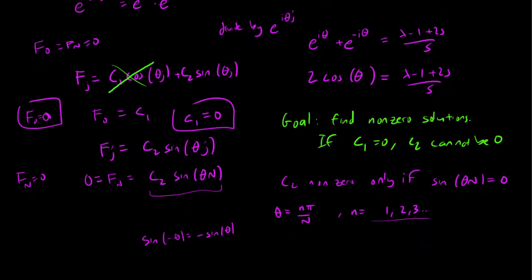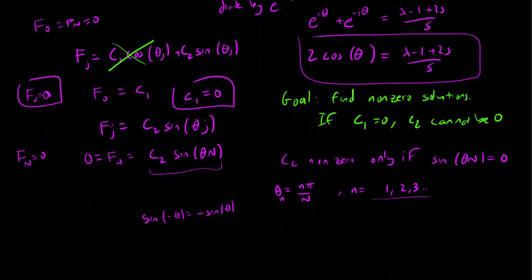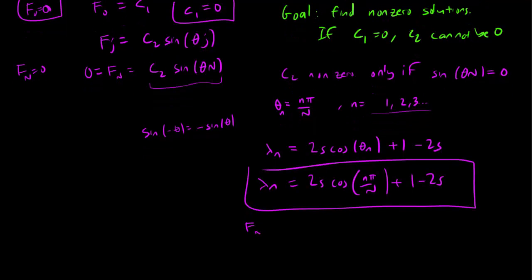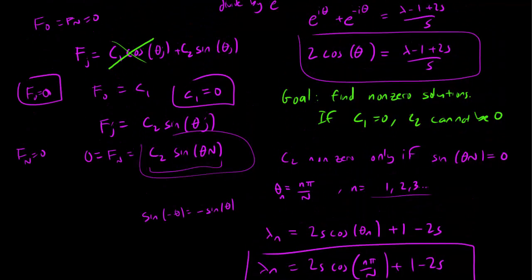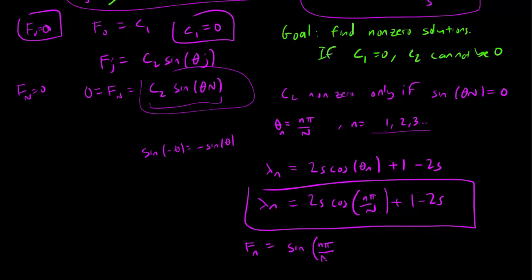And let's look at what the lambda is. Remember, we have this relationship between lambda and theta. So let's call this theta_n. And we have lambda_n is equal to 2s cos(theta_n) plus 1 minus 2s. And of course theta_n is just what these are. So we have lambda_n equals 2s cos(n pi over n) plus 1 minus 2s. These are our eigenvalues, lambda_n, and our eigenfunctions are given by f_n equals sin(n pi over n times j). So these are our eigenfunctions with this eigenvalue.